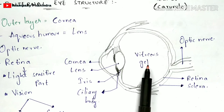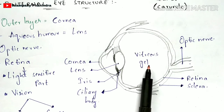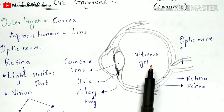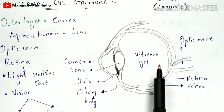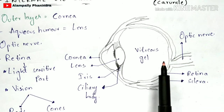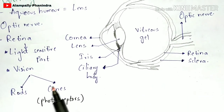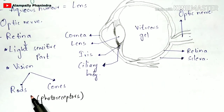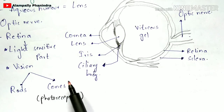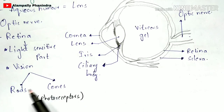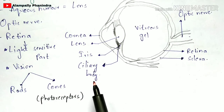Vision depends upon two types of cells called photoreceptor cells, and those cells are called rods and cones — rod cells and cone cells. These rods and cones are called photoreceptor cells.